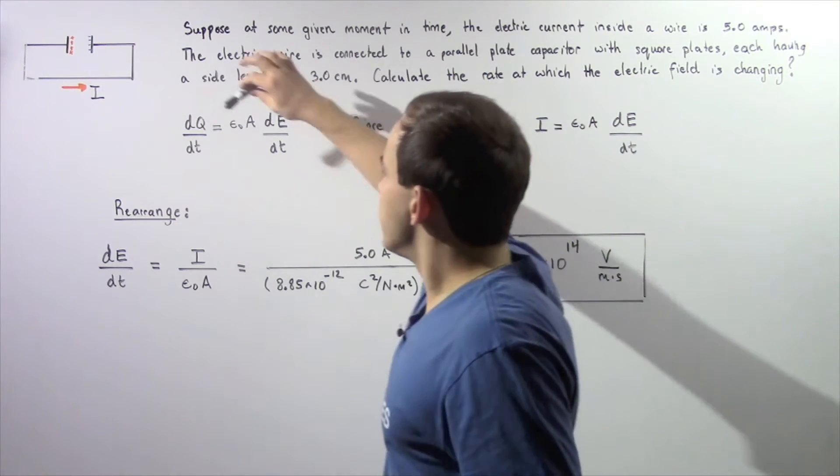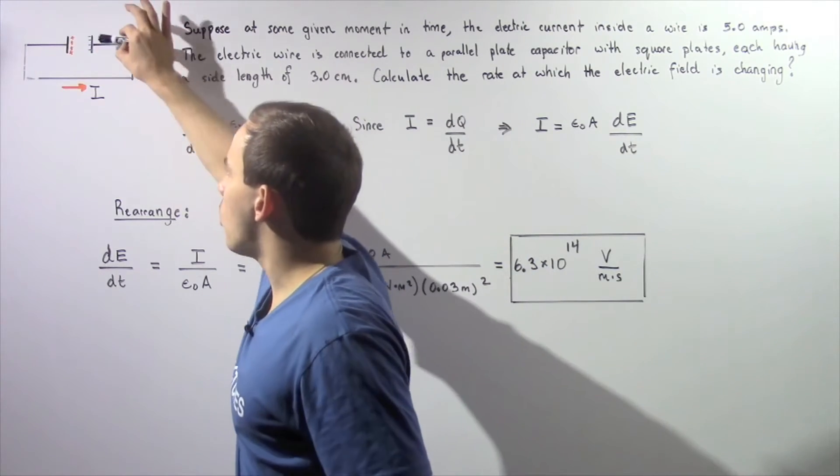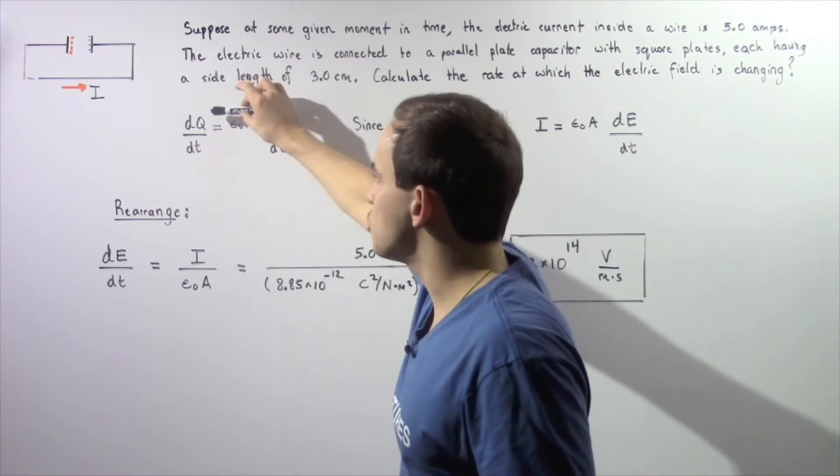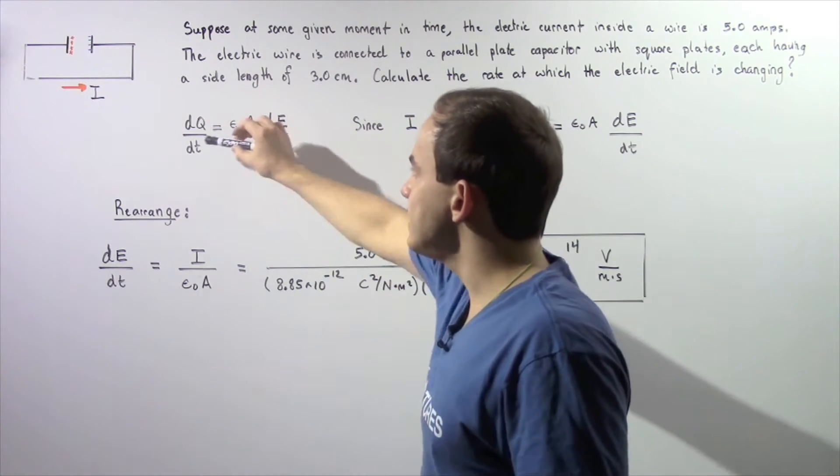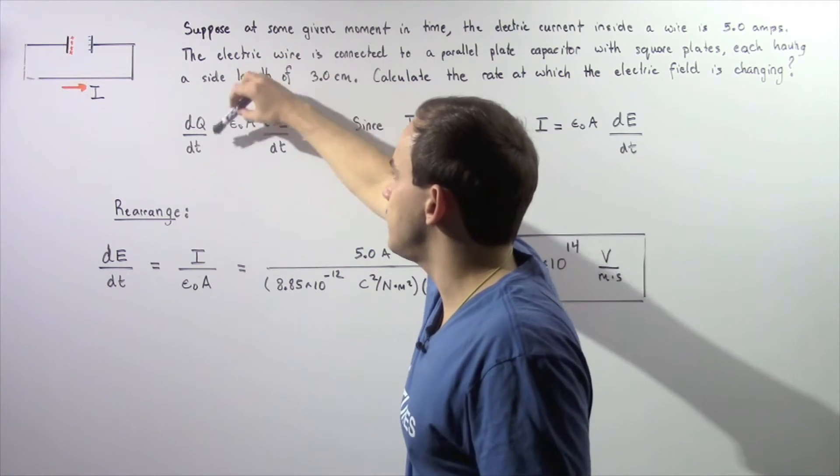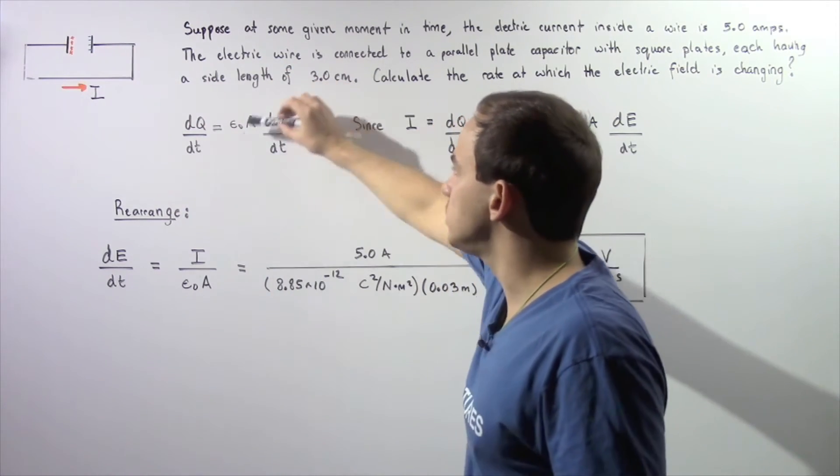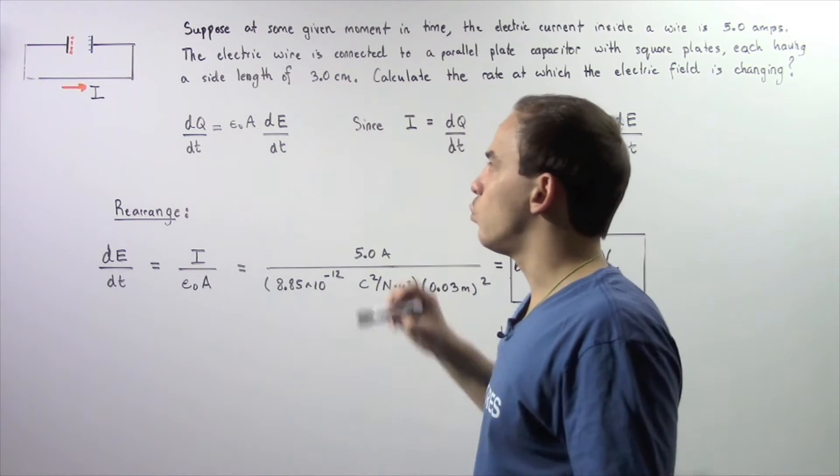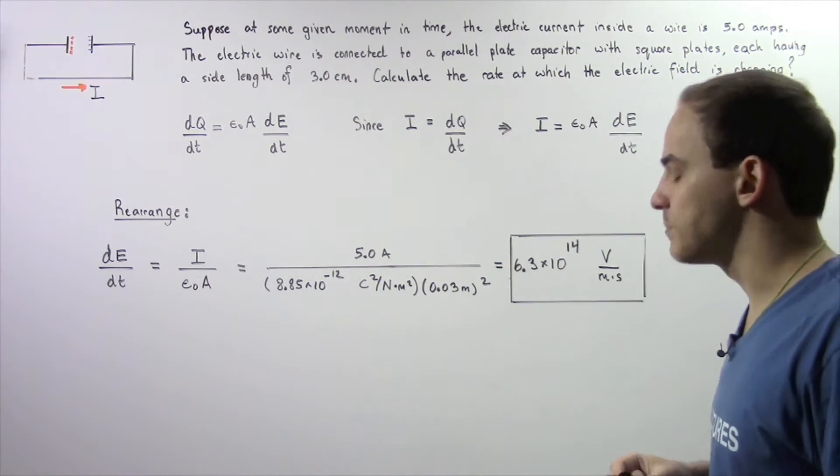The rate at which the quantity of charge on either one of these plates is changing with respect to time, dQ/dt, is equal to our permittivity of free space multiplied by the area of either one of these plates multiplied by the rate at which our electric field is changing with respect to time.